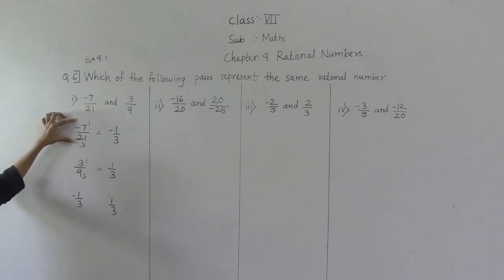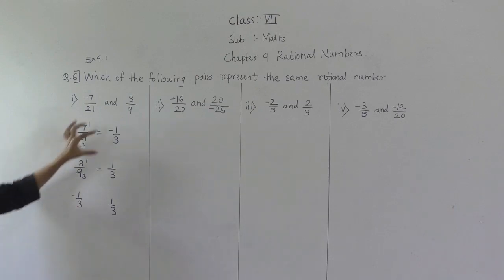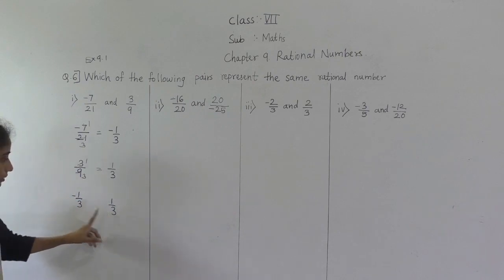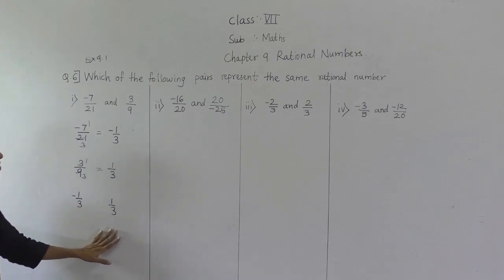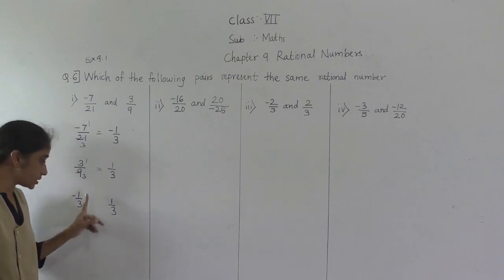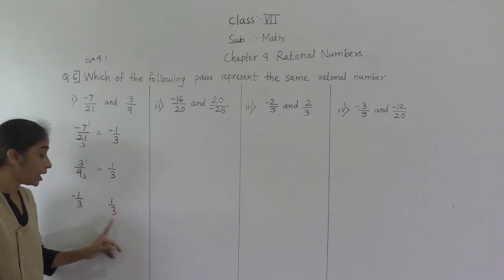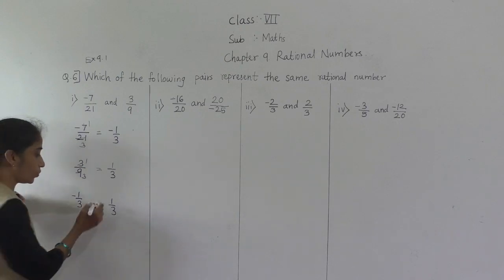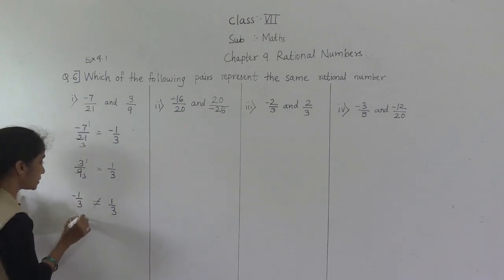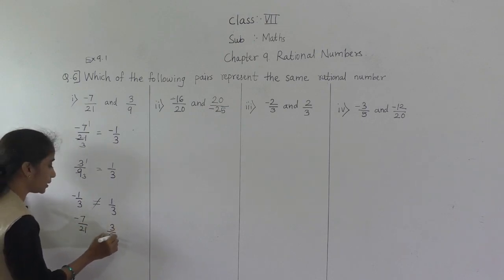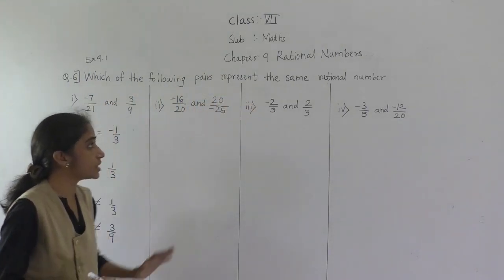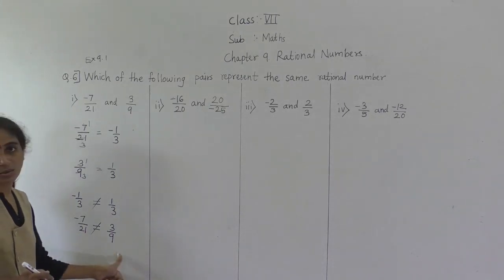So we got minus 1 upon 3 for the first number and 1 upon 3 for the second. One has a negative sign and the other is positive, so these are not equal. Therefore, minus 7 upon 21 and 3 upon 9 are not the same rational numbers.